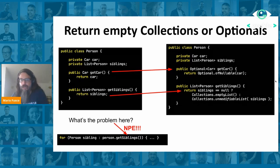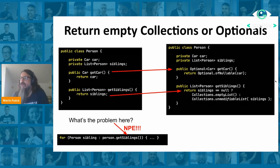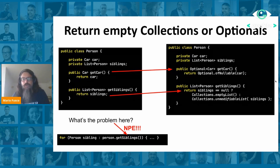In the same way, if a person may or may not have a car, use your type system to express this. In your domain model, a person may or may not have a car, so the getCar method should return Optional<Car> rather than Car. In this way you're telling your user with the type system: look, this person may or may not have a car — deal with it.